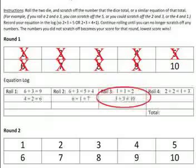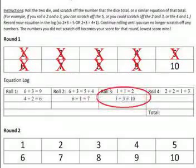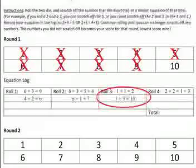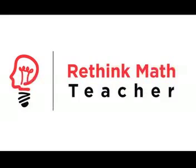I would continue to roll the dice and record my equations until something no longer worked. So let's say I crossed out all the numbers except 10 and then I rolled 3 plus 3. My last roll would say 3 plus 3 does not equal 10. And then my score would be 10 and the person with the lowest score wins. Thanks for watching.